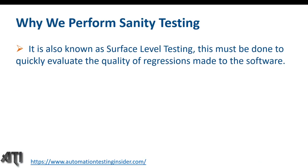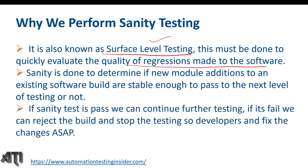Sanity testing is also known as surface-level testing. It must be done to quickly evaluate the quality of regressions made to the software. It's done to determine if new module additions to an existing build are stable enough to pass to the next level of testing. If sanity passes we continue; if it fails, we reject the build and stop testing so developers can fix the changes.